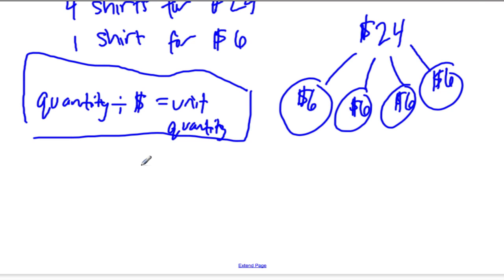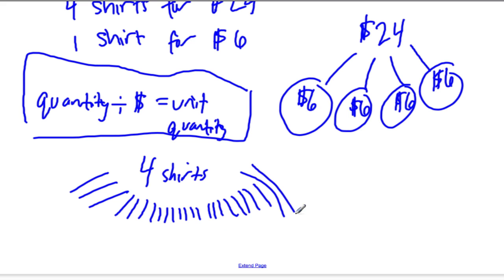So now let's reverse it. We have four shirts, and now we're dividing it 24 ways. 1, 2, 3, 4, 5, 6, 7, 8, 9, 10, 11, 12, 13, 14, 15, 16, 17, 18, 19, 20, 21, 22, 23, 24.